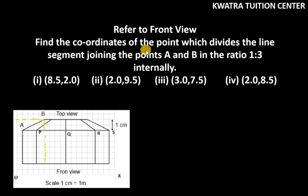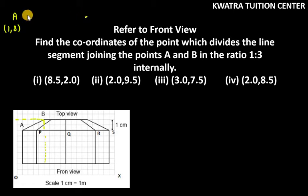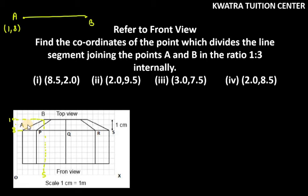Part D: find the coordinates of the point which divides the line segment joining points A and B in the ratio 1:3 internally. Point A is (1, 8). We find B from the graph given to us — checking the graph, x is 5 and y is at 10, so point B is (5, 10).